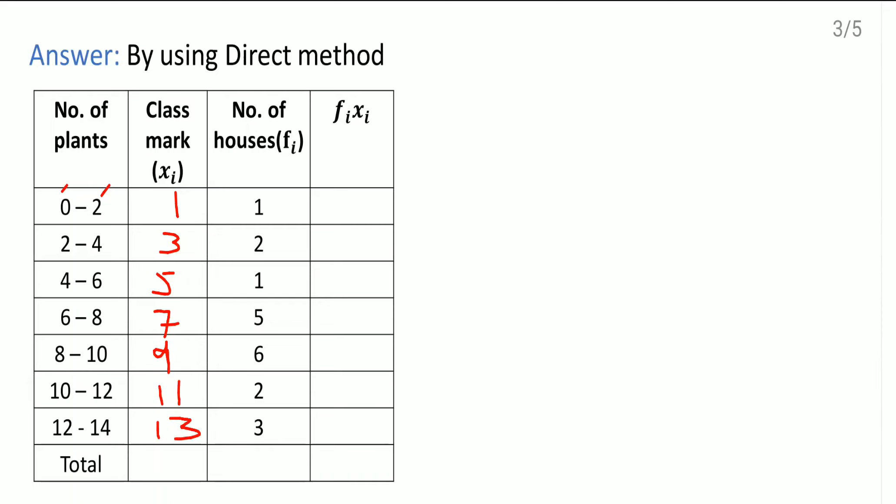Now, fi xi. That means 1 into 1 is 1. 3 and 2 is 6 here. This is 5. This one is 7, 5s are 35. So 35 here. This 5 here. Then 9, 6 are 54. 11, 2s are 22. And 13, 3s are 39.